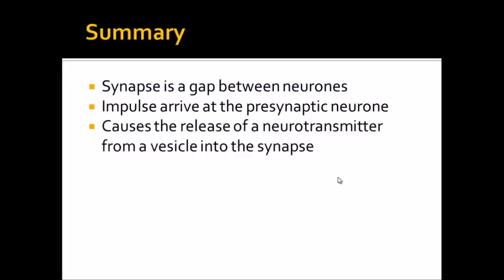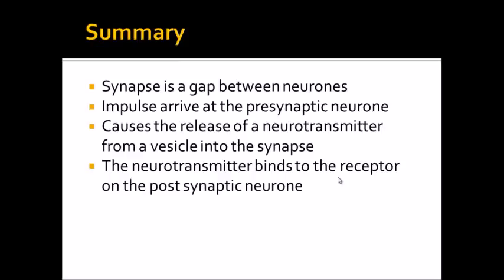What then happens is the neurotransmitter, which is a chemical released from a vesicle into the synapse. That neurotransmitter can then diffuse across the synapse and then it will bind to a receptor on the post-synaptic cell, the post-synaptic being the one after the synapse.